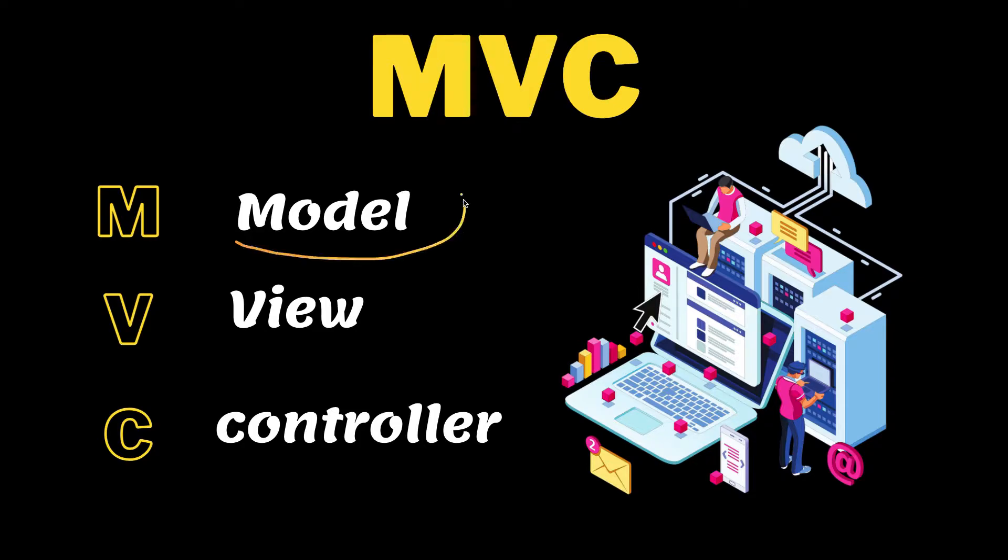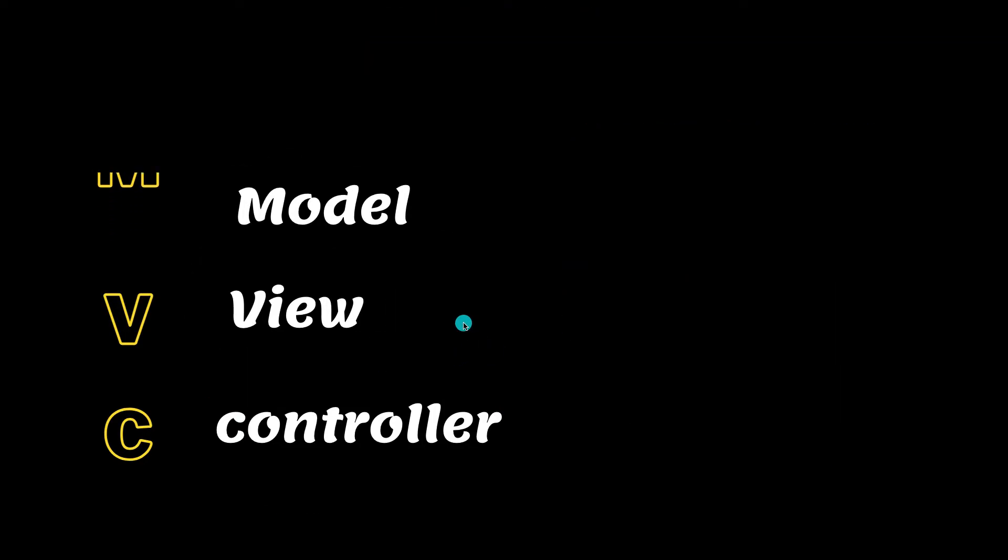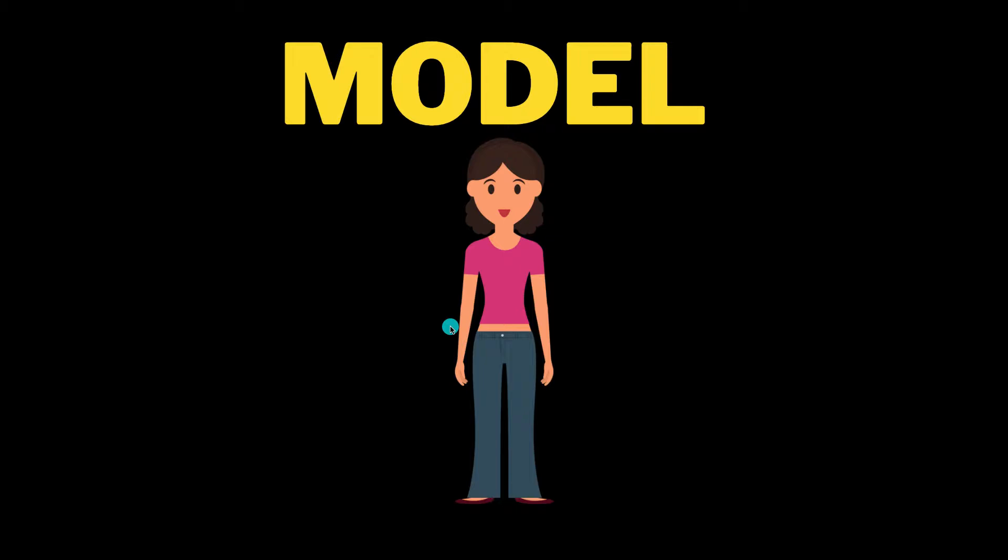So M stands for model, V stands for view and C stands for controller. So the first question comes into mind, what is model? So models make up your data structure. The kind of data you want to handle is what is called model. So model contains your database logic in your application.